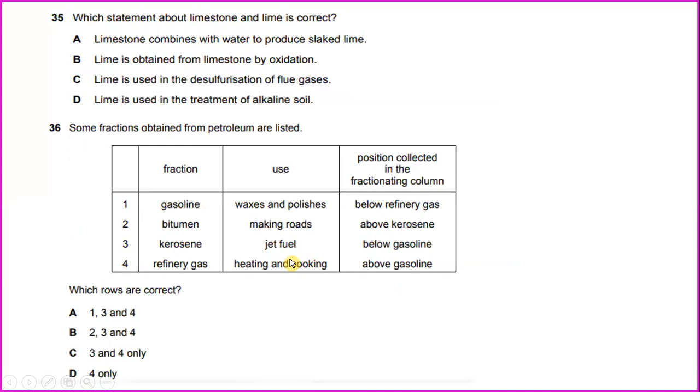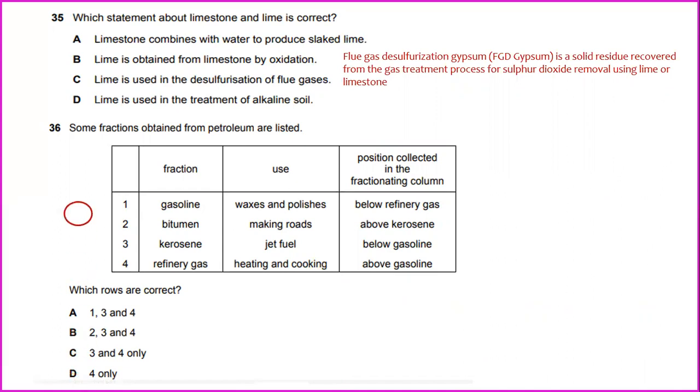Which statement about limestone and lime is correct? Flue gas desulfurization gypsum is a solid residue recovered from the gas treatment process for sulfur dioxide removal using lime or limestone. So the answer will be lime is used in the desulfurization of flue gases.